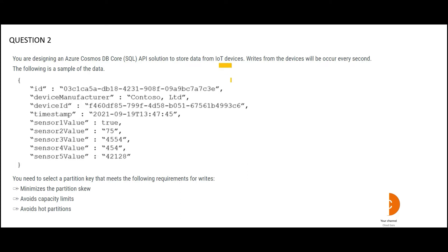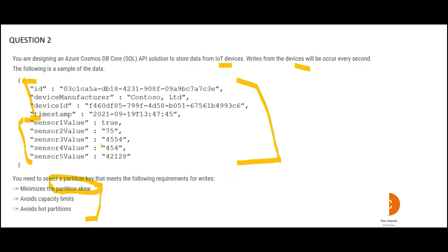The next question: you are designing a Cosmos DB solution to store IoT device data, and writes will occur every second. You need to select a partition key. Sensor values cannot be used as partition keys because they are scalar values. Timestamp should not be used in IoT scenarios because it creates hot partitions — if a bulk of data arrives in the first 30 seconds of a minute, one partition becomes huge while others remain small.